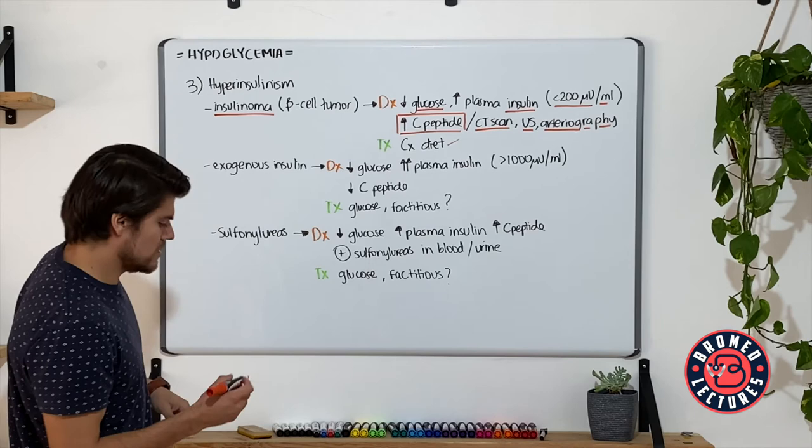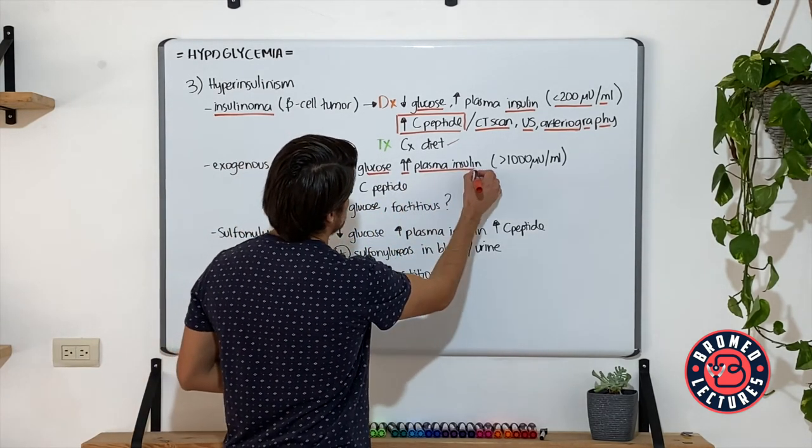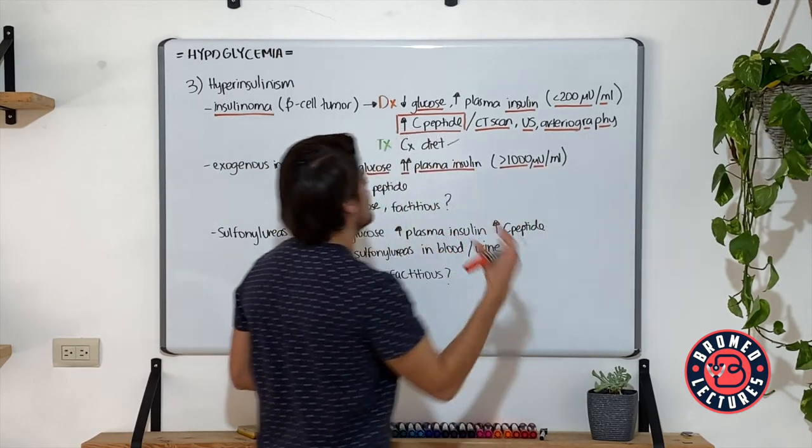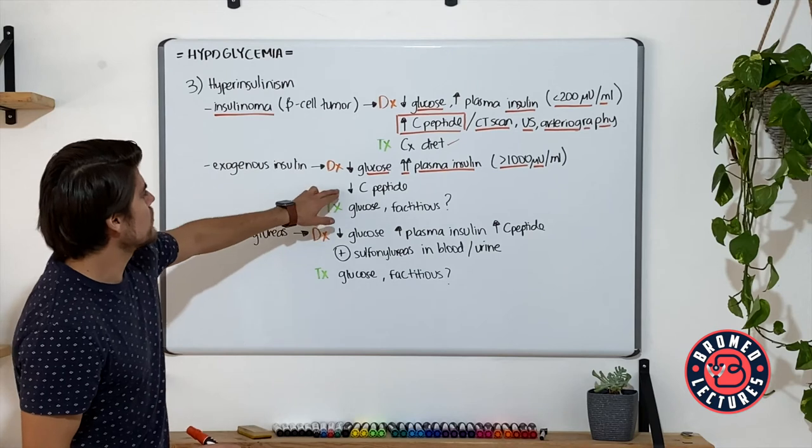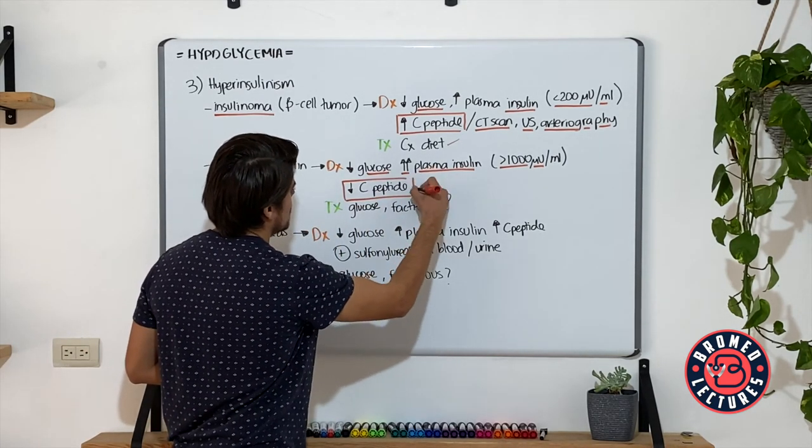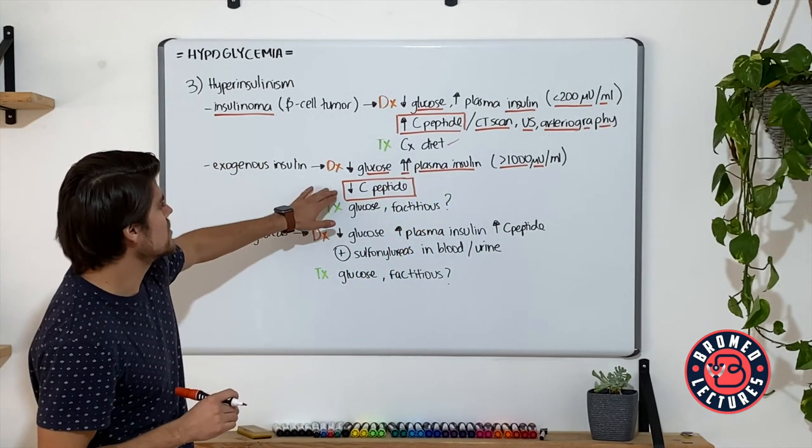For exogenous insulin, the diagnosis is, of course, a patient that has hypoglycemia, a super increased plasmatic insulin with levels higher than 1,000 microunits usually. And of course, a decreased C-peptide because this one is exogenous insulin administration and the pancreas is not generating this insulin. So the C-peptide is going to be down.